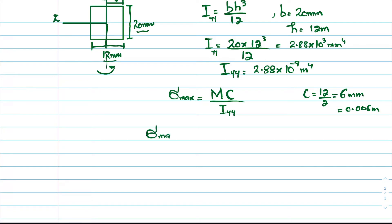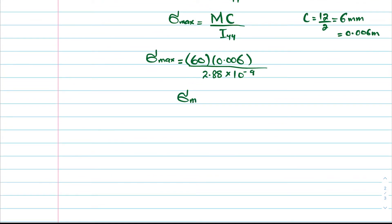Substituting the values: M = 60 N·m, c = 0.006 m, I_yy = 2.88 × 10⁻⁹ m⁴. Solving gives maximum stress = 125 × 10⁶ Pa, so the maximum stress when the couple is applied about the Y axis is 125 MPa.